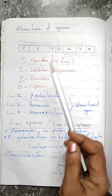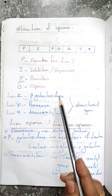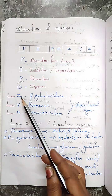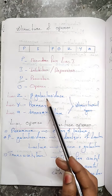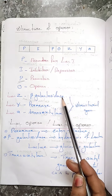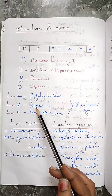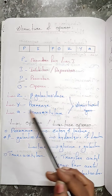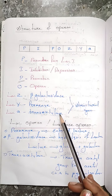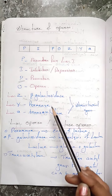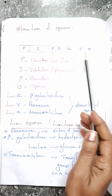What is the role of the structural genes? Lac Z is responsible for synthesizing the enzyme beta-galactosidase. Lac Y is responsible for synthesizing the enzyme permease. And lac A is responsible for synthesizing the enzyme transacetylase. These are the functions of the structural genes.